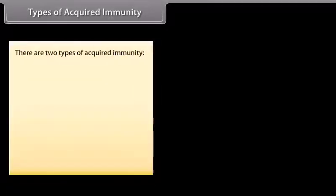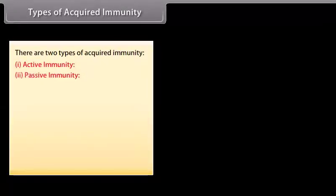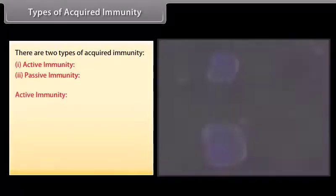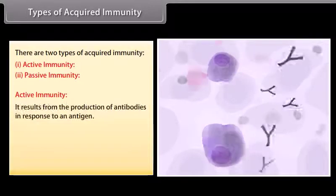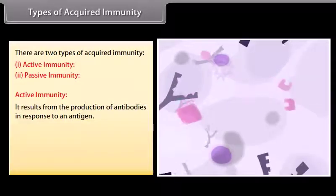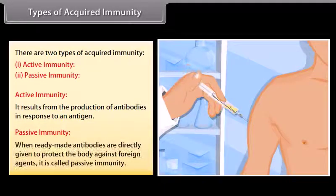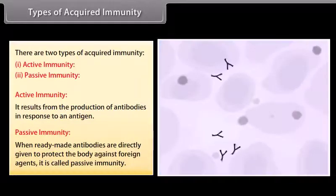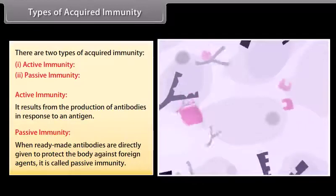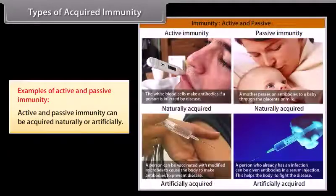There are two types of acquired immunity: active immunity and passive immunity. Active immunity results from the production of antibodies in response to an antigen. Passive immunity is when ready-made antibodies are directly given to protect the body against foreign agents. Active and passive immunity can be acquired naturally or artificially.